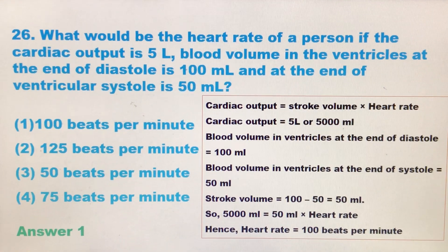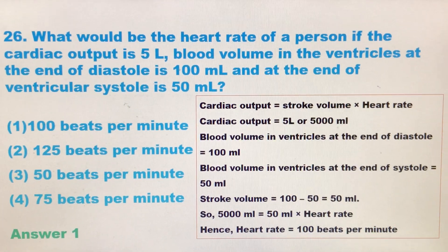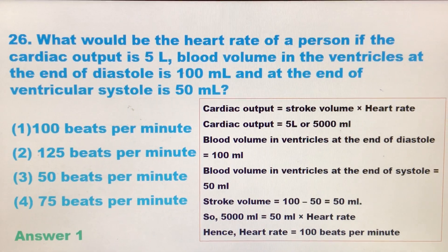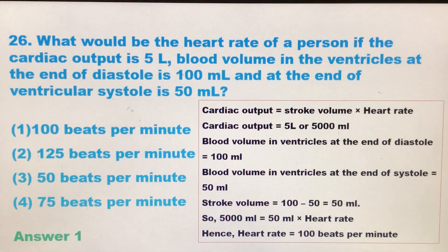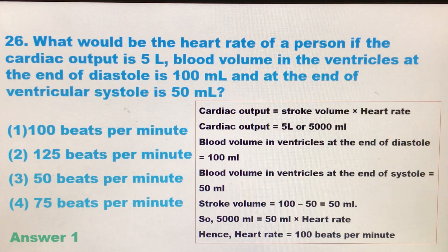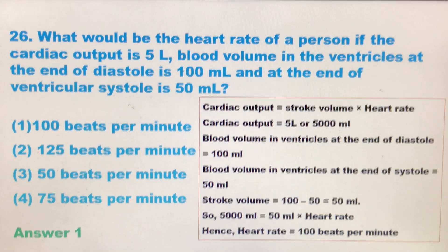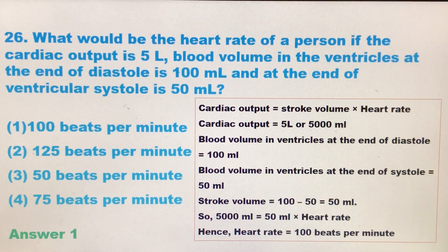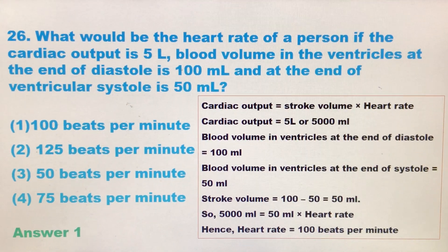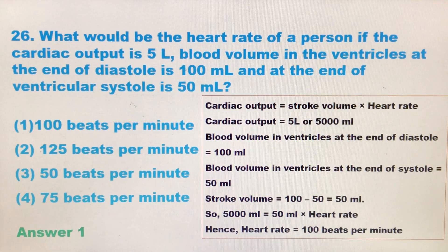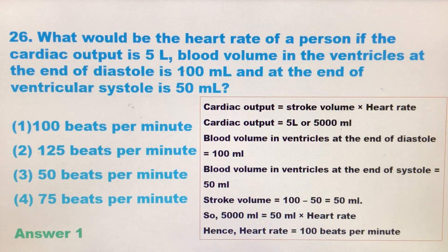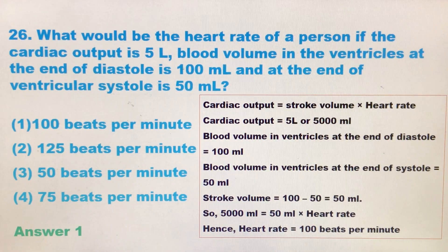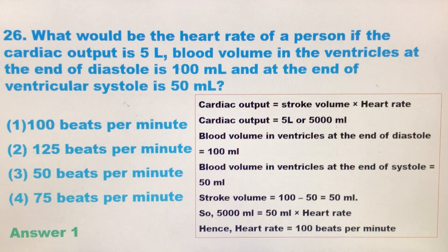Question number 26: what would be the heart rate of a person if the cardiac output is 5 liters, blood volume in the ventricles at the end of diastole is 100 ml, and at the end of ventricular systole is 50 ml? The four options are 100 beats per minute, 125 beats per minute, 50 beats per minute, and 75 beats per minute.